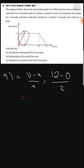Question A says calculate the acceleration during the first 3 seconds. We know that acceleration is equal to final velocity minus initial velocity over time taken. In this case our final velocity is 12, minus initial velocity which is 0, over time taken which is 3. So that's 12 over 3, which gives us an acceleration of 4 meters per second squared.